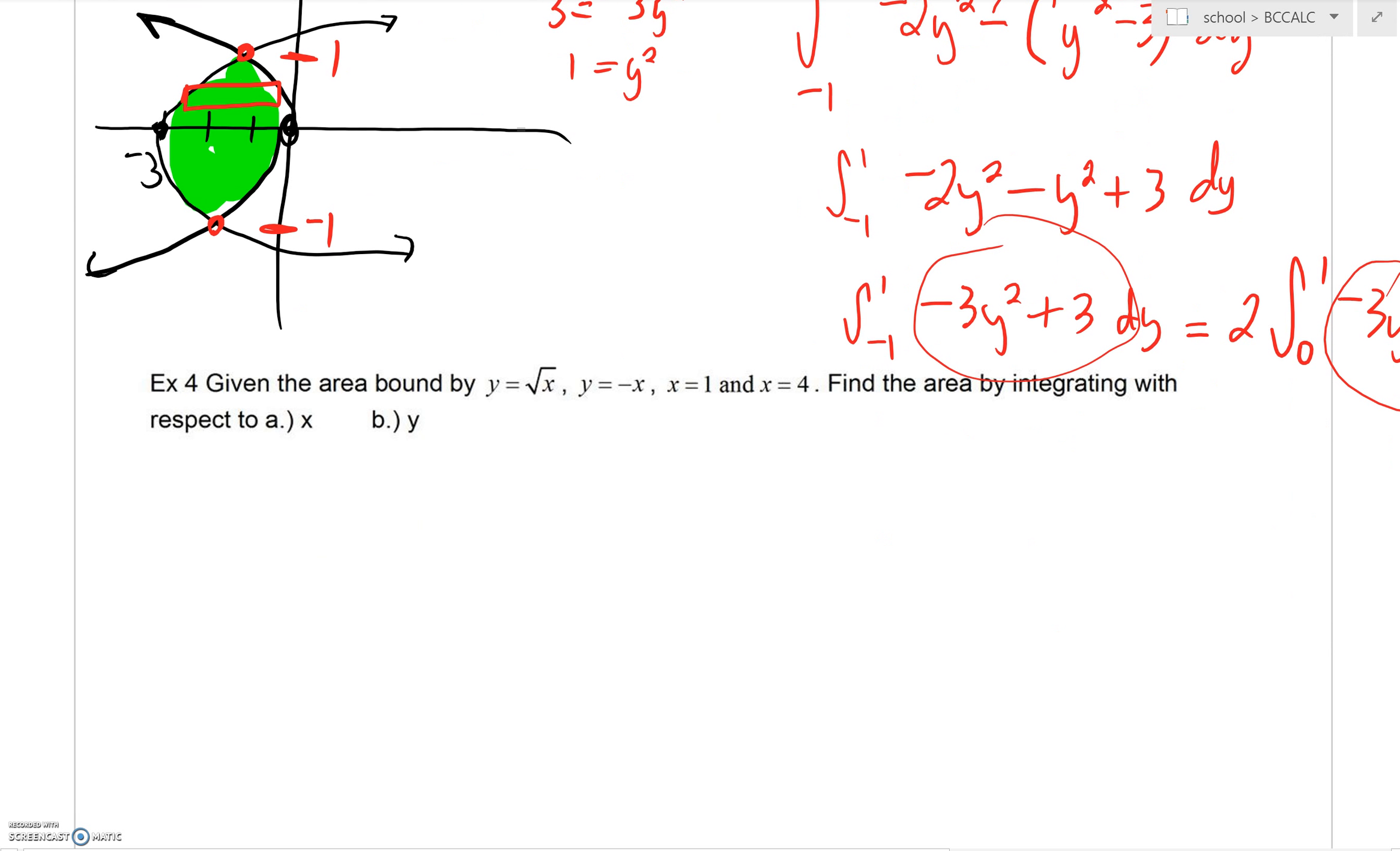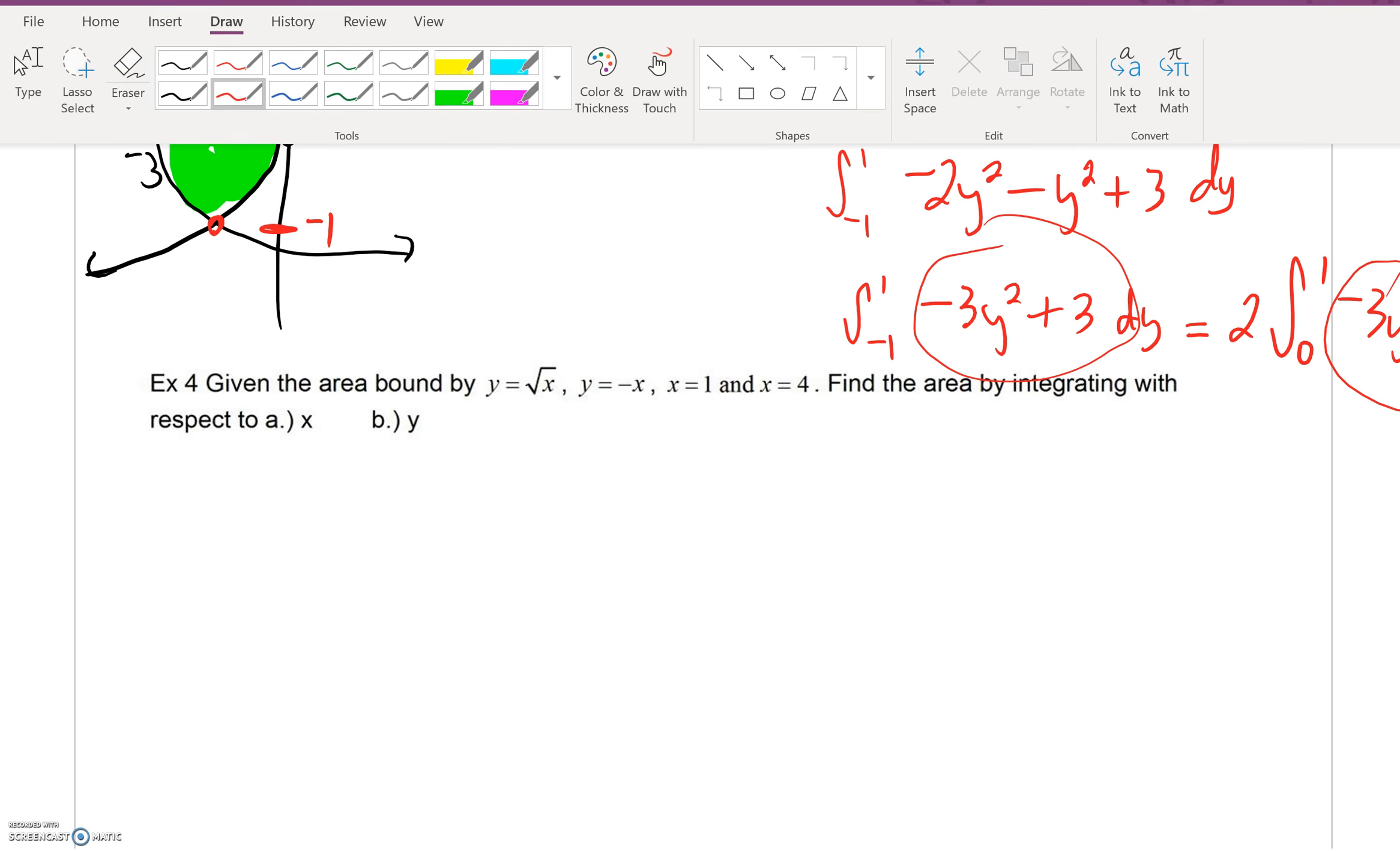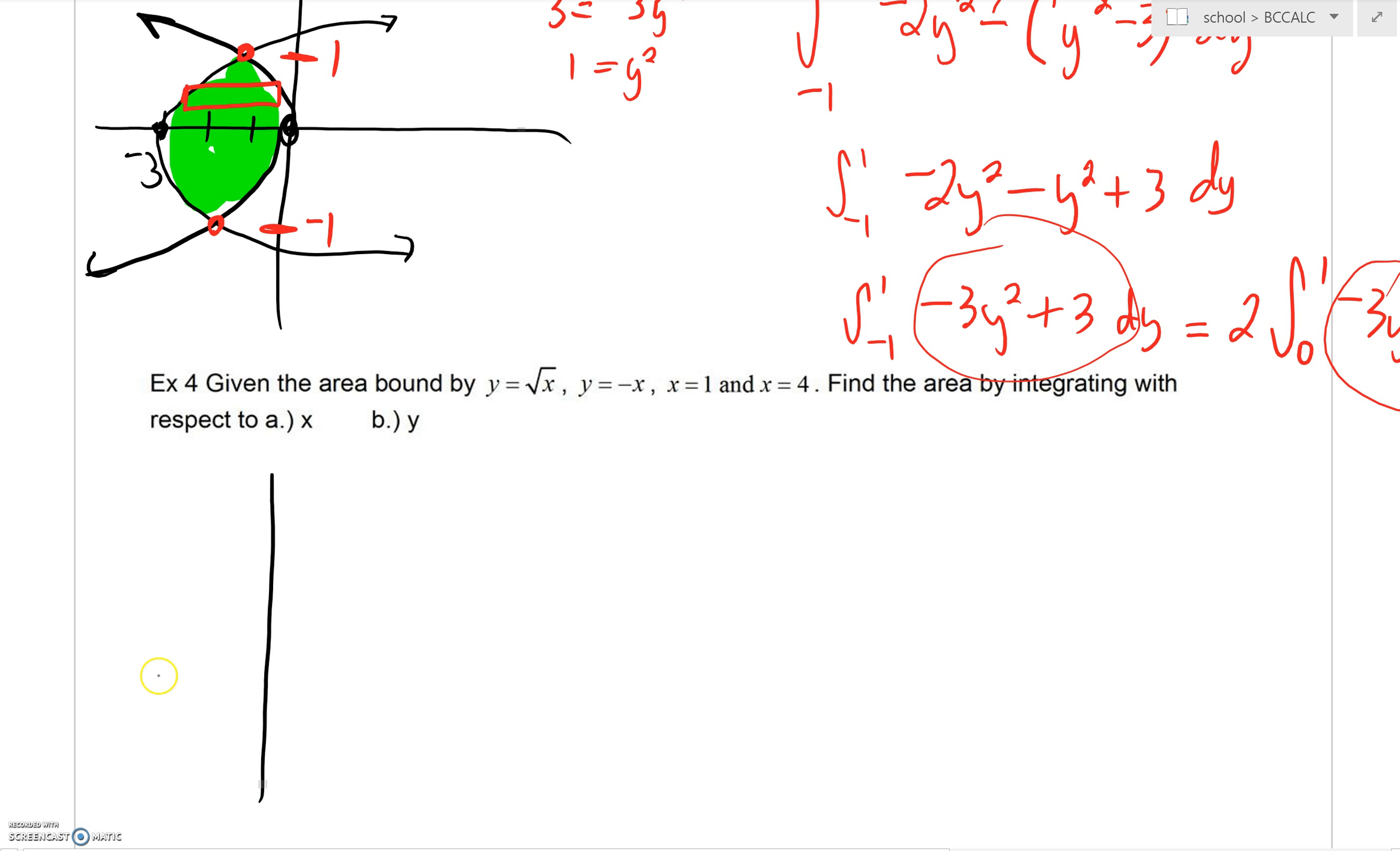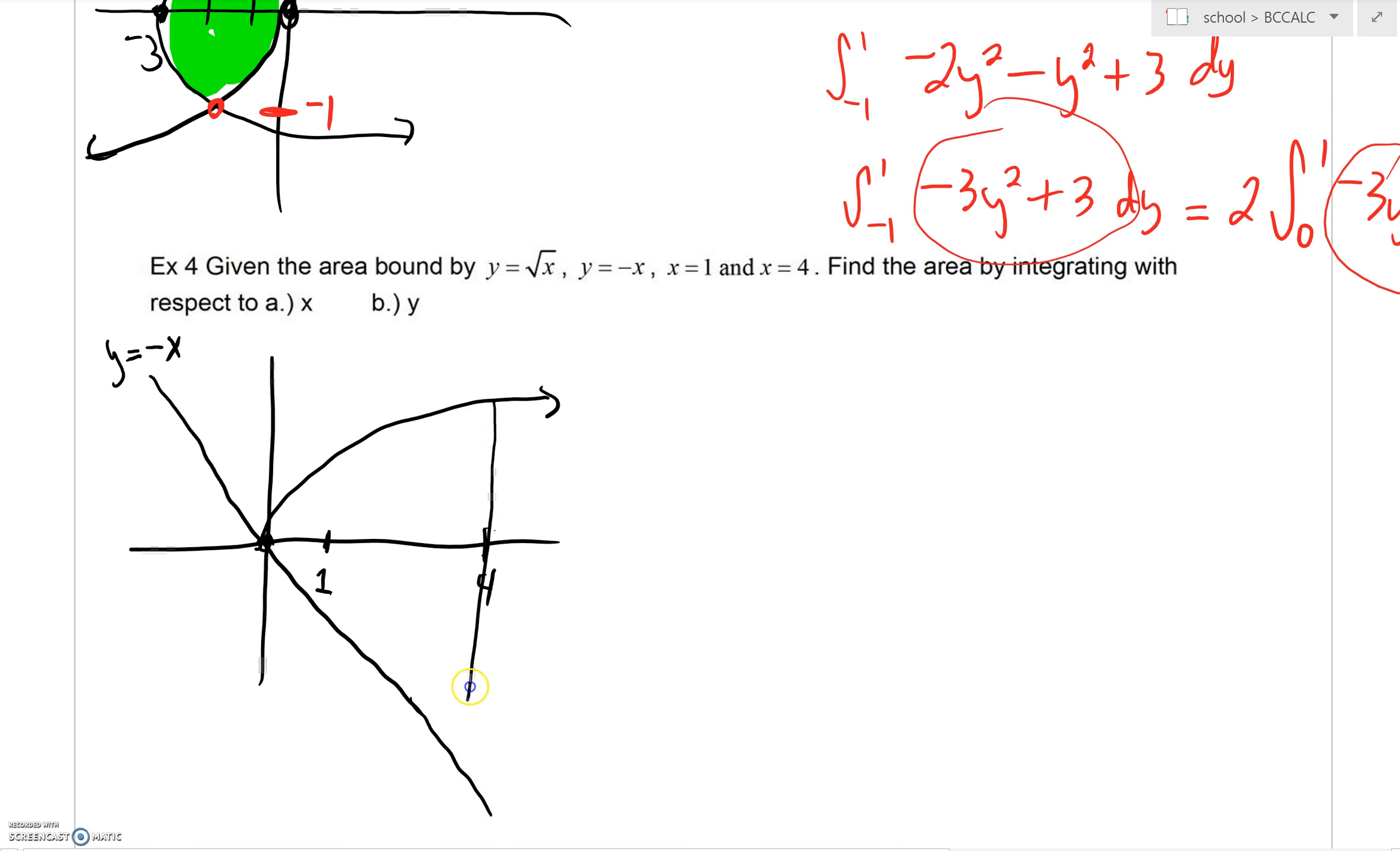For the sake of time, we're not going to do both part A and part B. Very often I think it's important for us to work in the most intelligent manner. Let's see which method would be easier. We have a square root function, and that's going to look something like so. It's a parabola opening on its side. We have y equals negative x, that's going to be a curve that looks something like so. And we're going to have x equals 1 all the way out to x equals 4. And they want us to find the enclosed area.